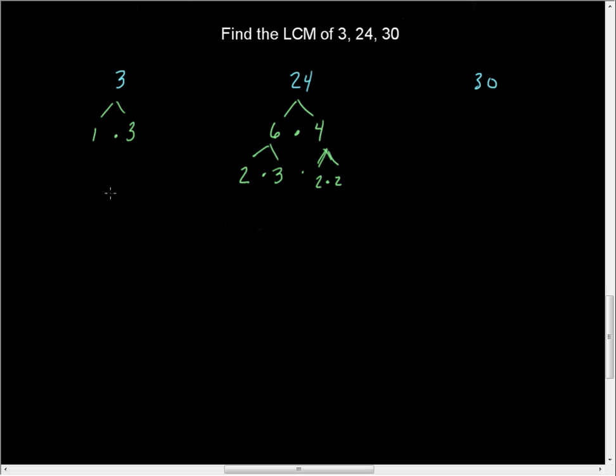And so I have, in the case of the number 3, I have the number 3, and that's it. That's my only prime, so I'm going to put 3 to the first. In 24, I have 1, 2, 3 twos. That's 2 to the third power times 3 to the first.